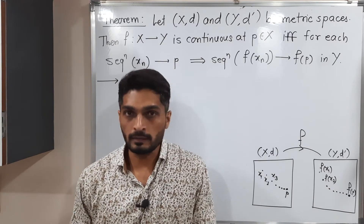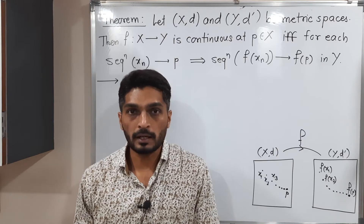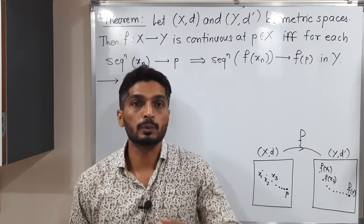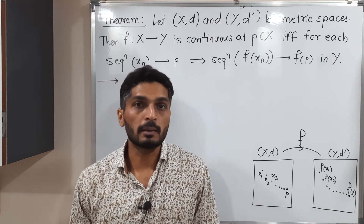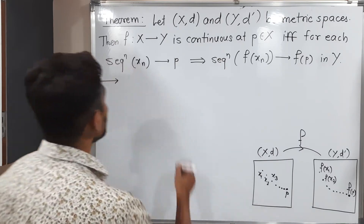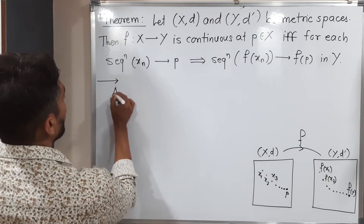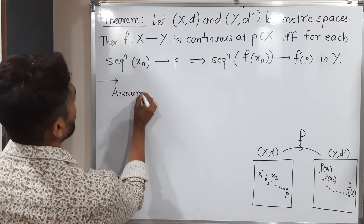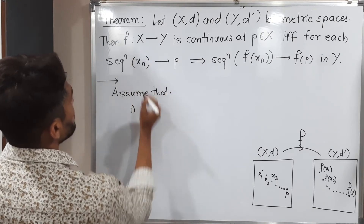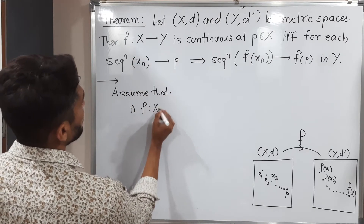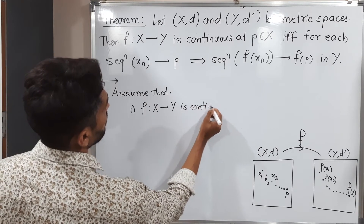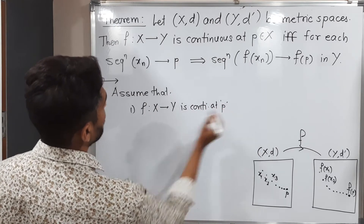Since we have an if and only if condition, we assume one part and prove the second part, then conversely assume the second part and prove the first part. So let us start by assuming one part. Assume that f defined from X to Y is continuous at p.